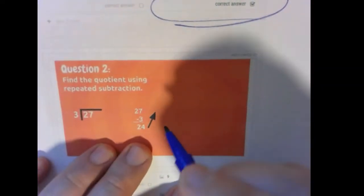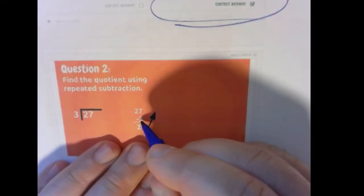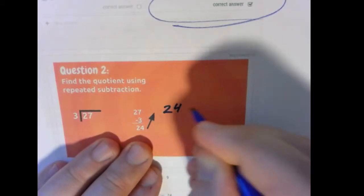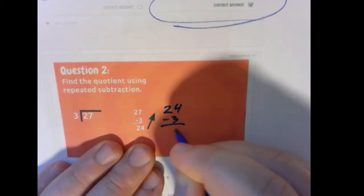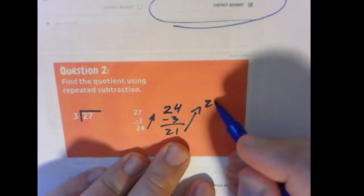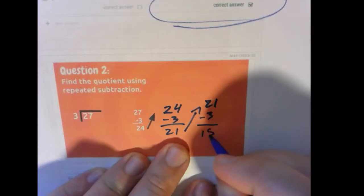Let's work through another example. 27 divided by 3. You can probably figure that out, but let's practice our new method. So 27 minus 3 is 24. Bring that to the top. 24 minus 3 gives us 21. Bring that up. 21 minus 3 gives us 18.